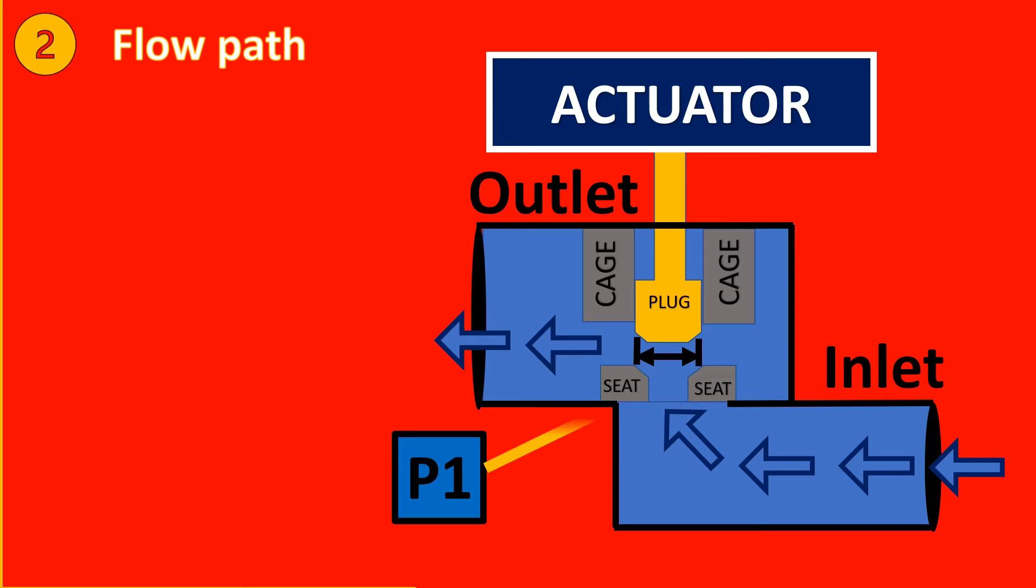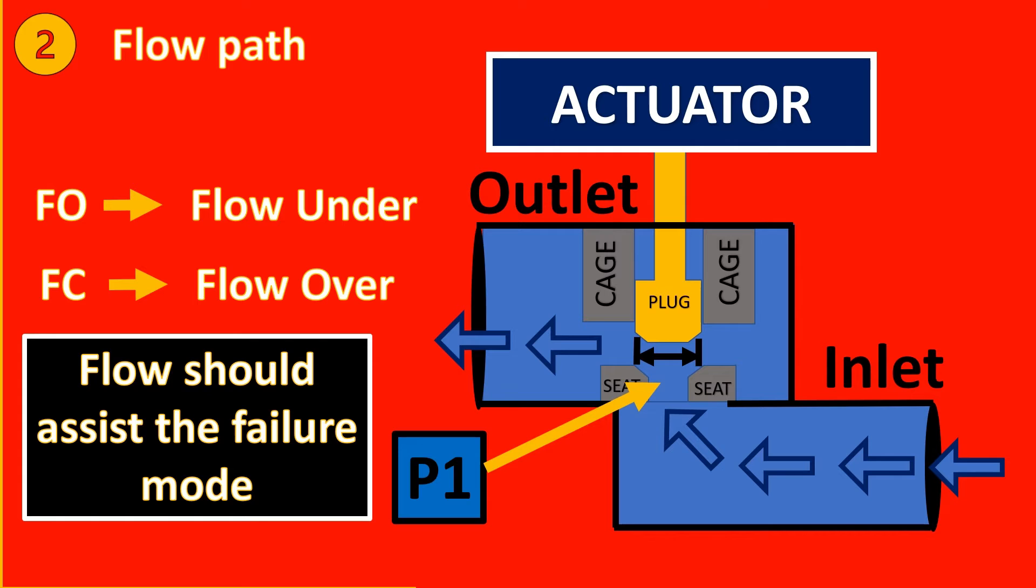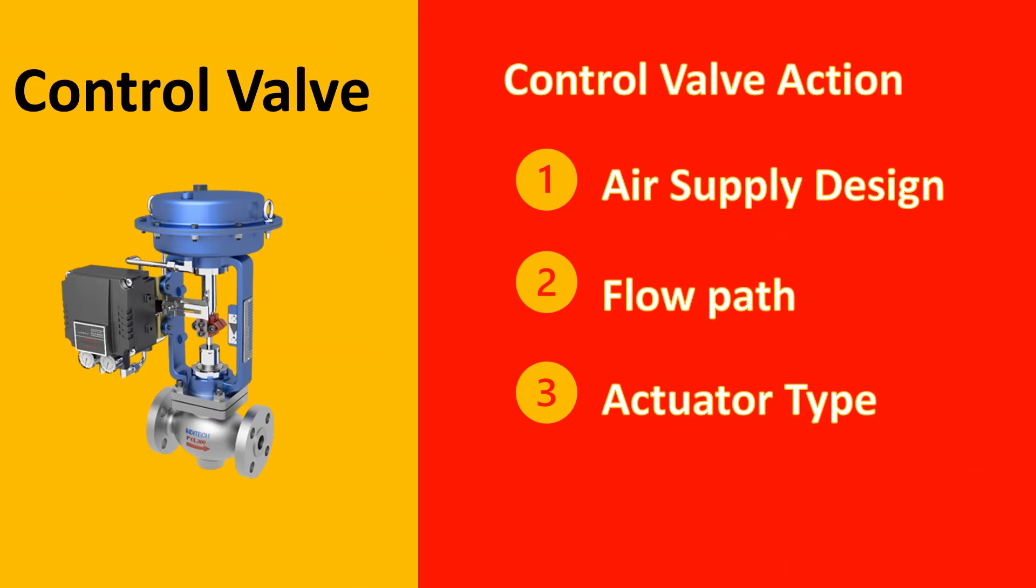Example here, the fluid flow is actually producing a pressure to put the plug in the opposite direction or in the top direction to open the valve. So for a fail open valve you should have the flow under the valve for a globe valve. And similarly fail close should be for flow over the valve in order that the flow helps to close the valve. So in a simple way you can say that as a thumb rule the flow should assist the failure mode.